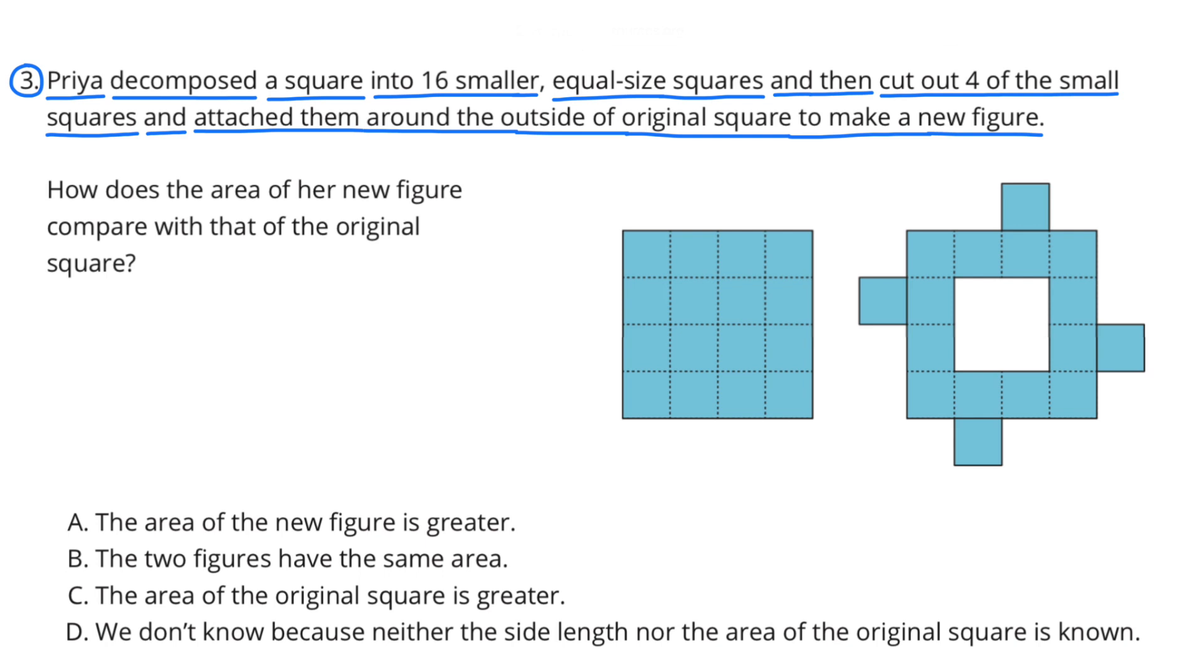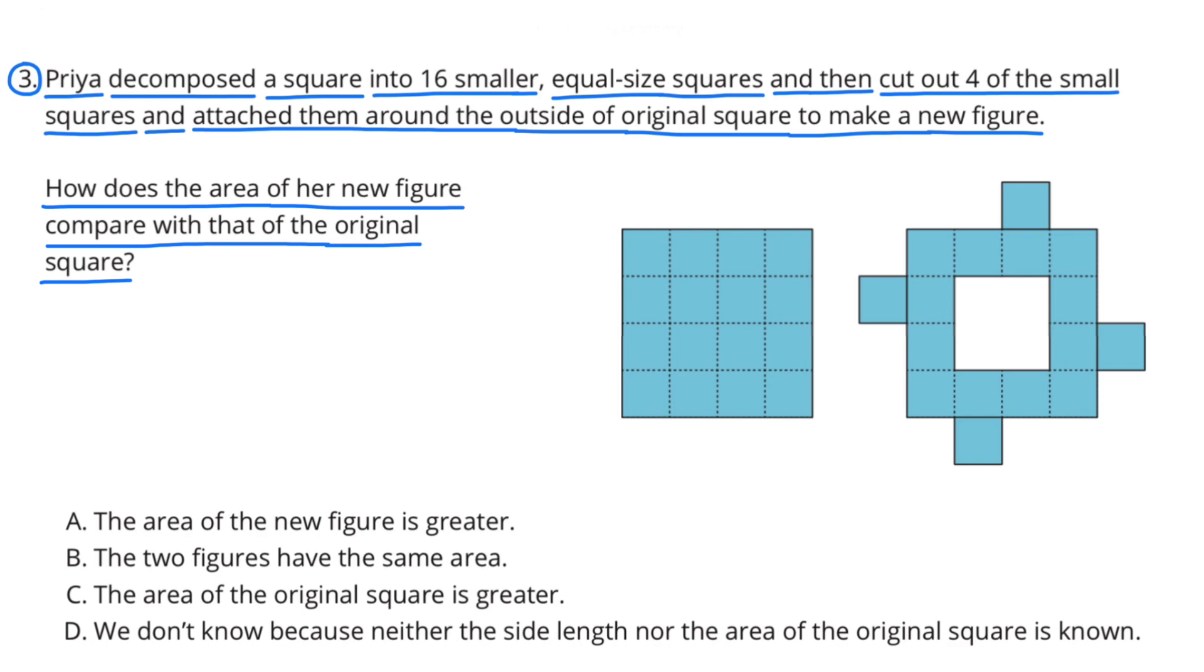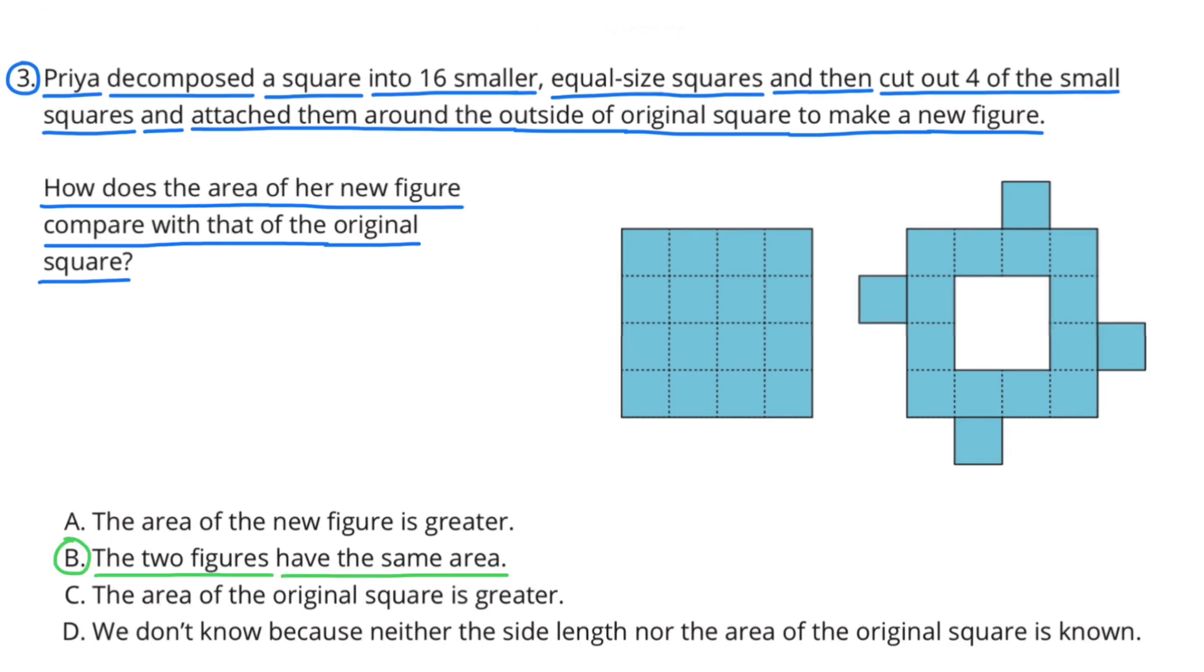Number 3. Priya decomposed a square into 16 smaller, equal-sized squares, and then cut out four of the small squares and attached them around the outside of the original square to make a new figure. How does the area of her new figure compare with that of the original square? B. The two figures have the same area.